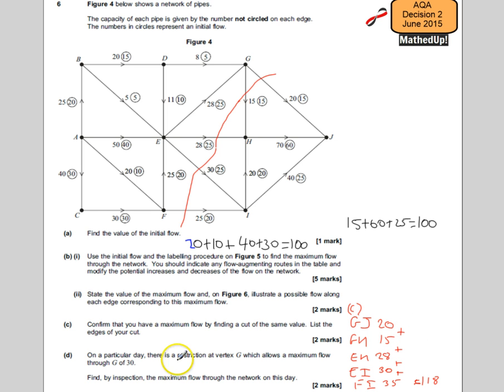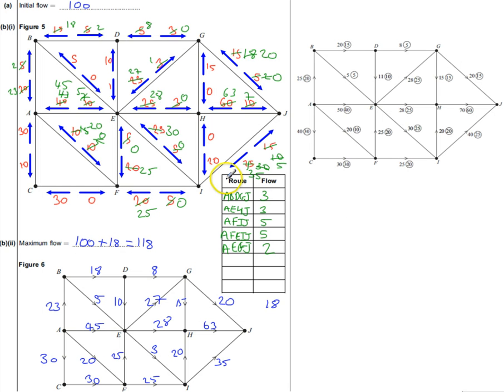Part D says on a particular day there was a restriction at vertex G which allows a maximum flow through of 30. Find by inspection what the maximum flow through the network would be on this particular day. At G we're saying there's now a restriction that means maximum of 30 is allowed to flow through. At the moment through G I've got 27 and 8, so 35 going in and 35 coming out.